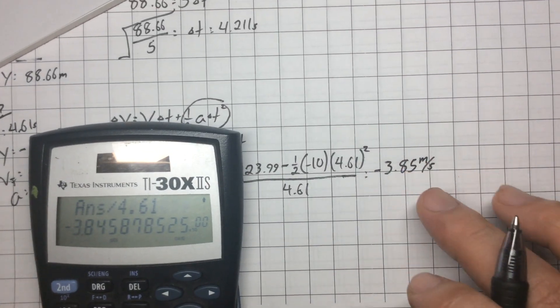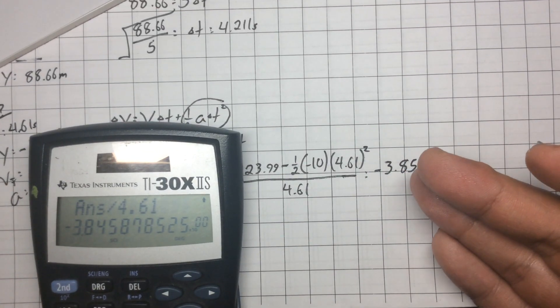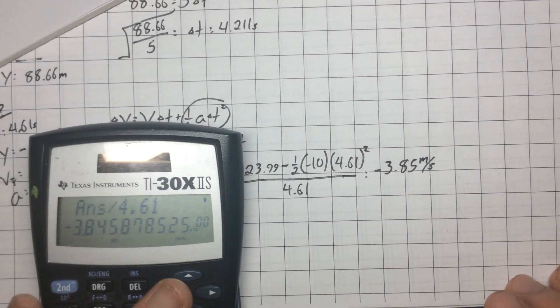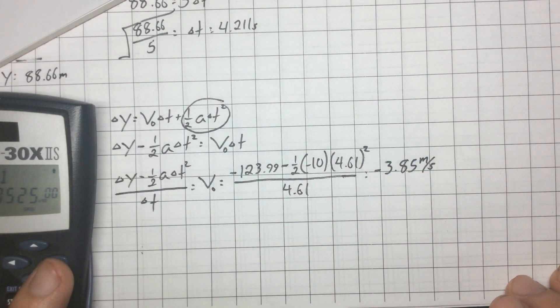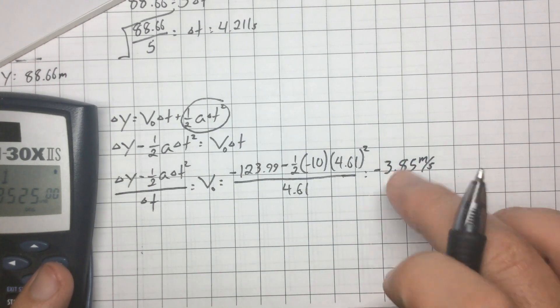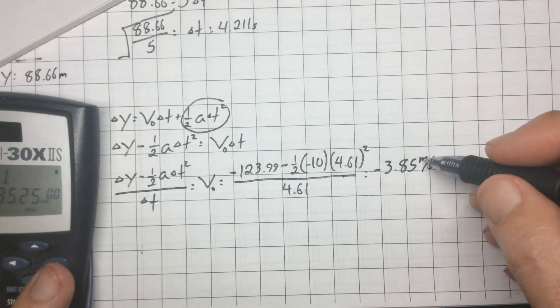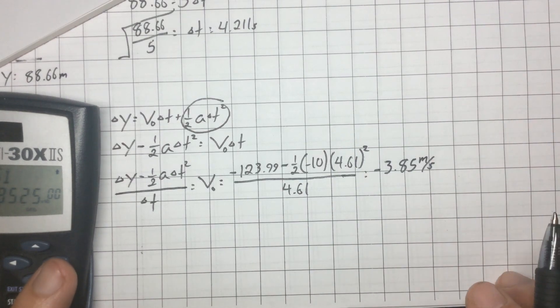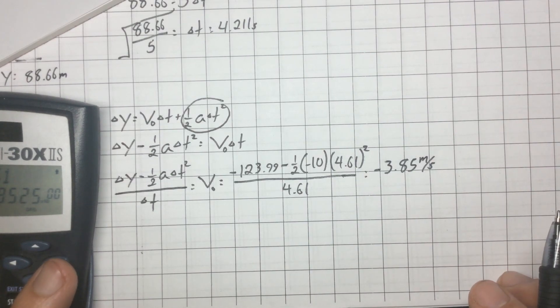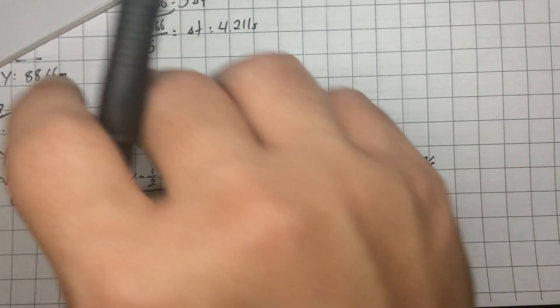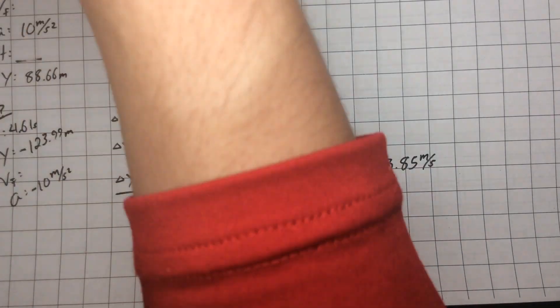The negative 3.85 tells me this object was thrown downward initially. My answer is 3.85 — I won't put in the units because the quiz does not accept letters for units. Let me get a new page and continue on.